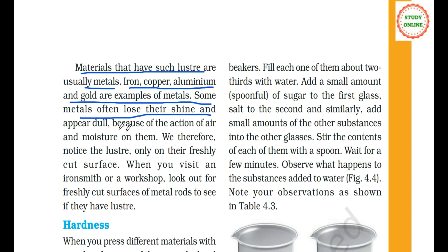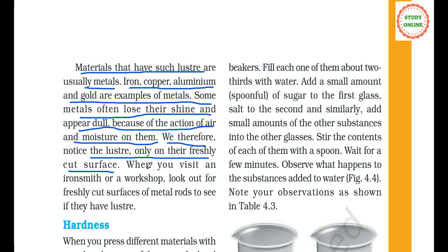Some metals often lose their shine and appear dull because of the action of air and moisture on them. For example, gold earrings — if we always wear them, their shine may reduce. But if you clean them with a little toothpaste and a brush, you will see that the shine comes back. So even in metals, lustre reduces due to the action of air and water.